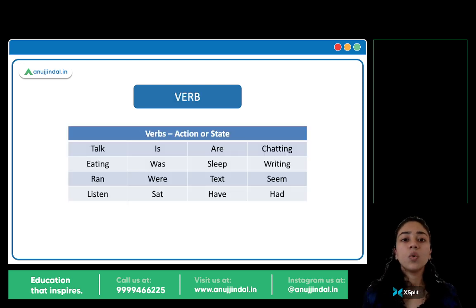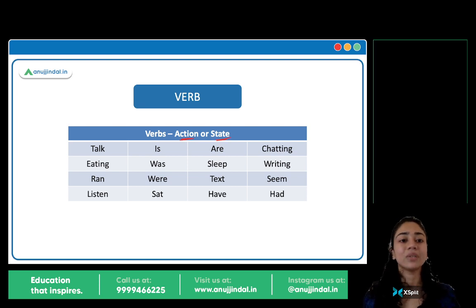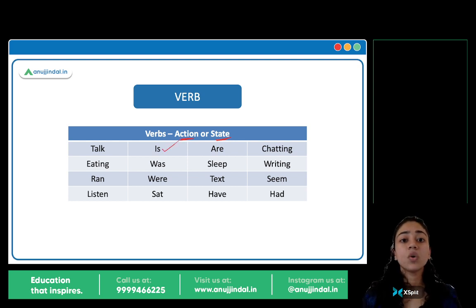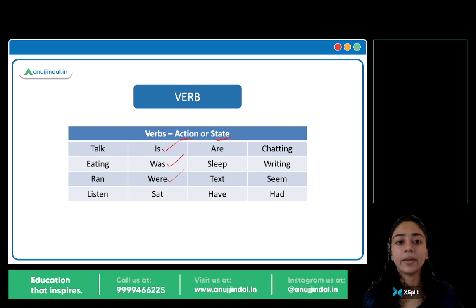Next is verb. A verb is an action or a state — a word used to describe an action or a state. Action ki baat: talk, eat, run, eating, listening, sleeping, writing, chat, text — yeh sare actions hai. Is, was, were, has, have, had, are — these are states of being. Toh yeh bhi verb hai.